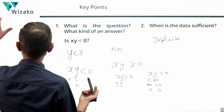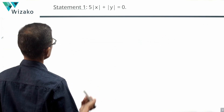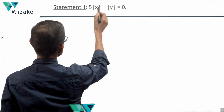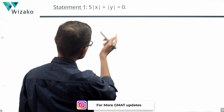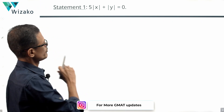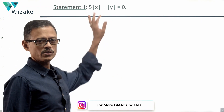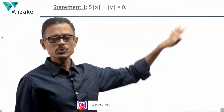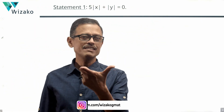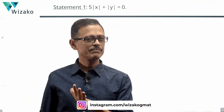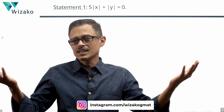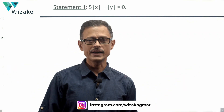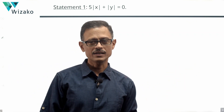Let's start with Statement 1 and see what it has to tell us. Statement 1: 5 times the modulus of X plus the modulus of Y is equal to 0. This is one equation with two variables. At face value you might say, I know nothing about X or Y — how can I do something about it?